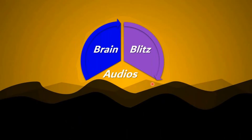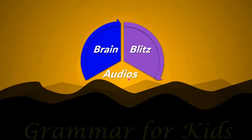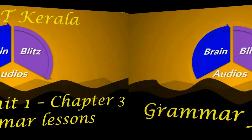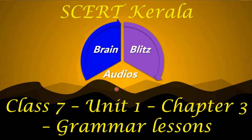Hello everyone, welcome to Brain Blitz Audios. Today we'll be doing a new segment of Grammar for Kids. We'll be dealing with Chapter 3 in Unit 1 of Class 7 in the SRT Kerala syllabus. Let's begin then.